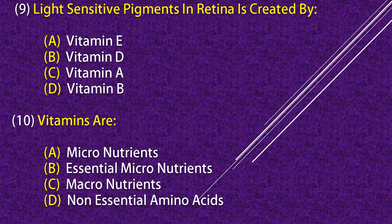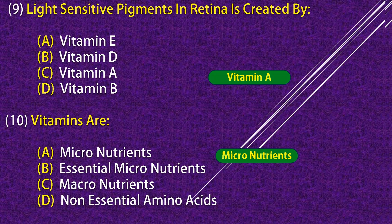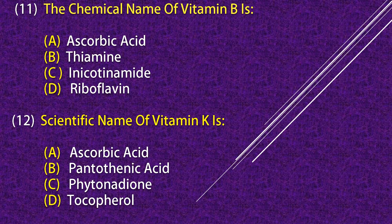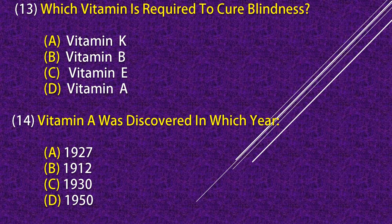Light-sensitive pigments in the retina are created by Vitamin A. Phytomenadione. Which vitamin is required to cure night blindness?